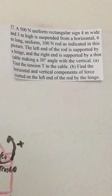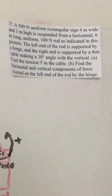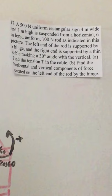A 500 newton uniform rectangular sign 4 meters wide and 3 meters high is suspended from a horizontal 6 meter long uniform 100 newton rod as indicated in this picture.